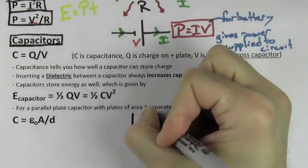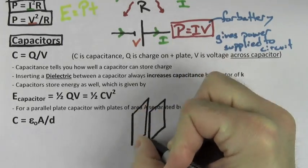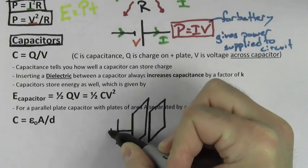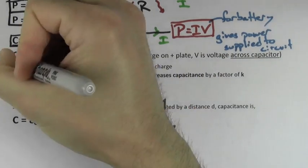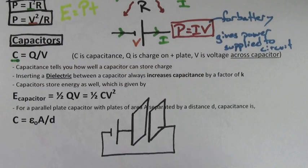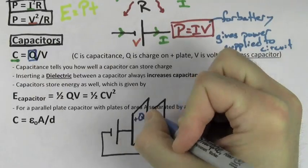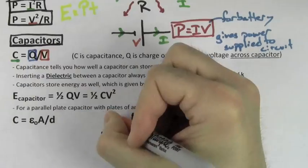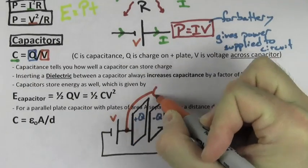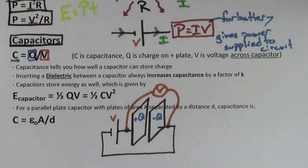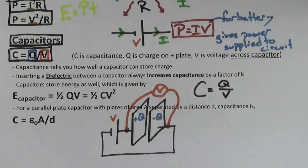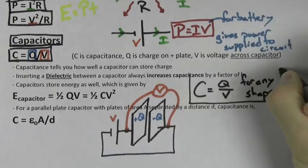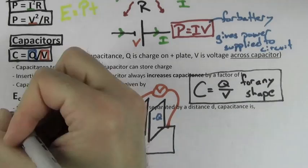Capacitors are devices that store charge and store energy. The definition of capacitance is the charge per voltage — in other words, the charge on one of the plates divided by the voltage across that capacitor. C equals Q over V is the definition of capacitance and so it works for any capacitor of any shape.